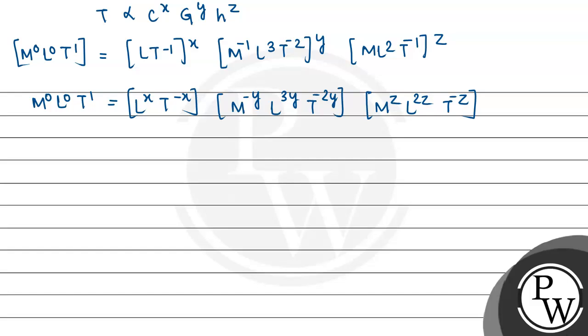Now M to the power 0, L to the power 0, T to the power 1 equals L to the x, T to the minus x, M to the minus y, L to the 3y, T to the minus 2y, M to the power z, L to the power 2z, T to the power minus z. Now we solve the equation. See, M to the power 0, L to the power 0, T to the power 1. The L powers will all add up: x plus 3y plus 2z.